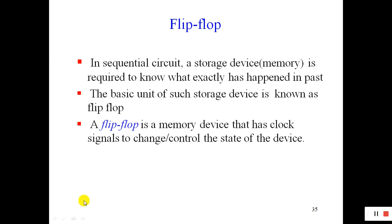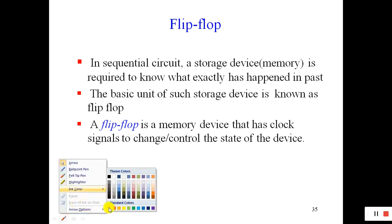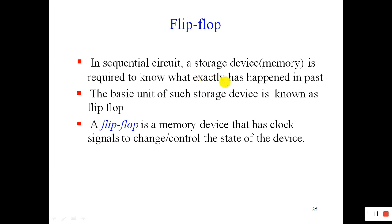In a sequential circuit, a storage device or memory is required to know what exactly has happened in the past. Sequential circuits are those whose output depends on the present input as well as the previous output. So what happened previously — we need to store that data or that output.